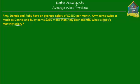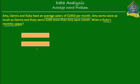Here is what we know. We know the average salary of the three people, which is $2,650 per month. So let's put that on a model. Here is the average salary of the three people — Amy, Dennis, and Ruby. So this is Amy, this is Dennis, and this is Ruby.